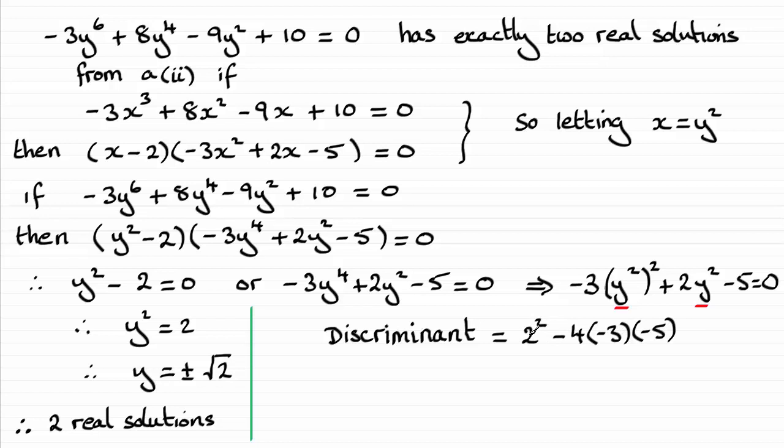Work this out, you've got 4 minus 60, which is going to give you minus 56. And it is a negative number, so we'd expect no real solution.